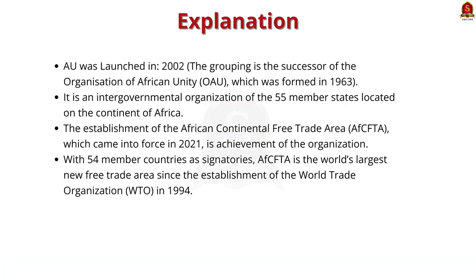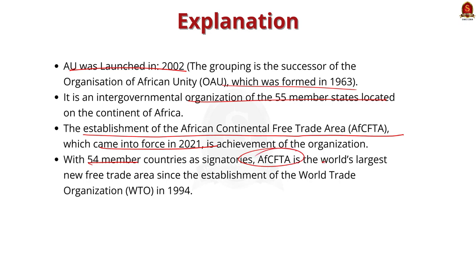African Union was launched in 2002. The grouping is the successor of the Organization of African Unity which was formed in 1963. It is an intergovernmental organization of 55 member states located in the continent of Africa. The establishment of the African Continental Free Trade Area, which came into force in 2021, is the achievement of this organization. With 54 member countries as signatories, the African Continental Free Trade Area is the world's largest new free trade area since the establishment of WTO. So all the statements are correct.